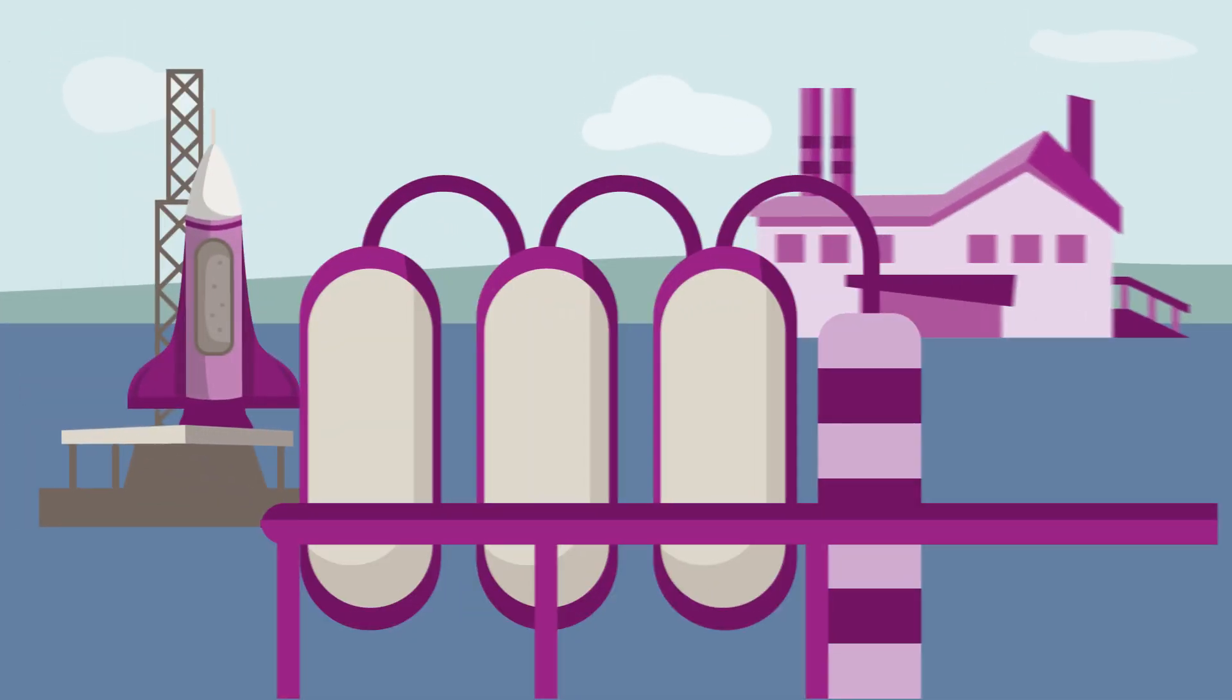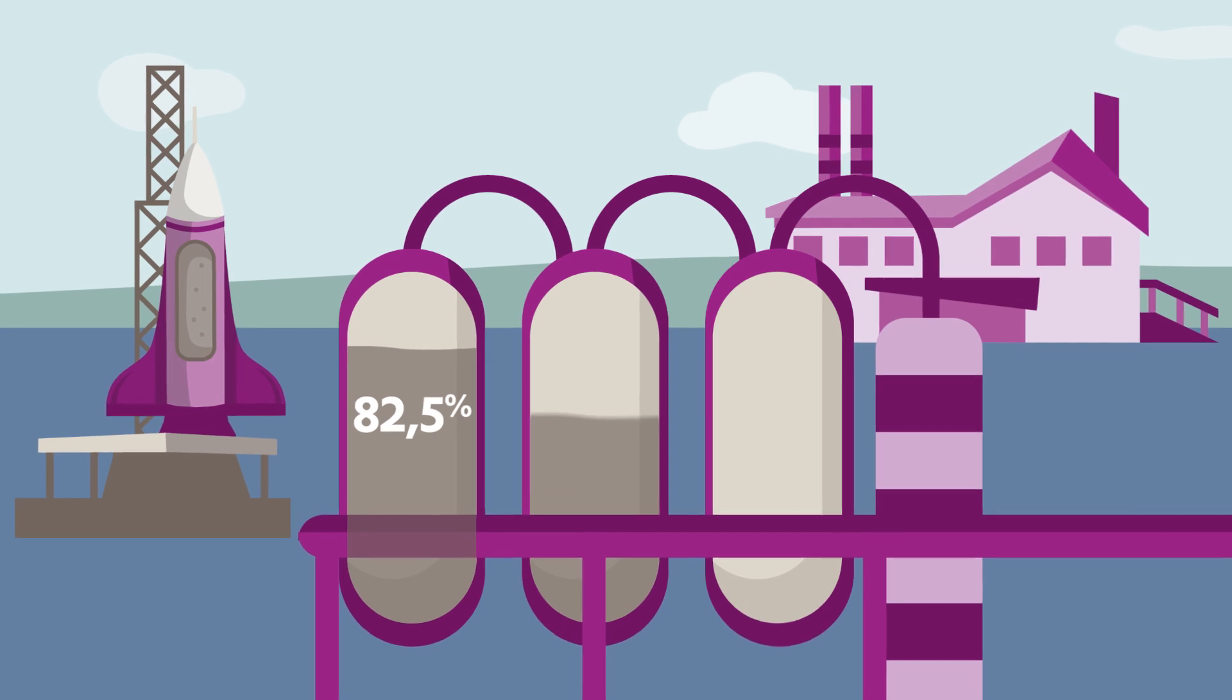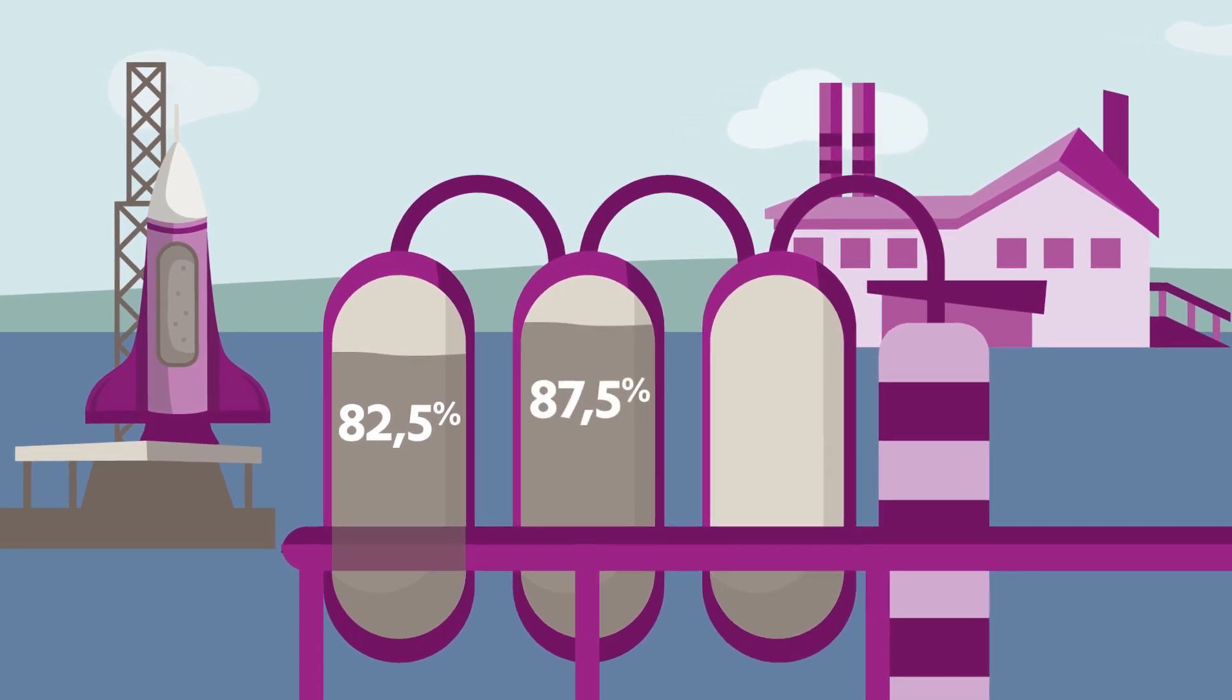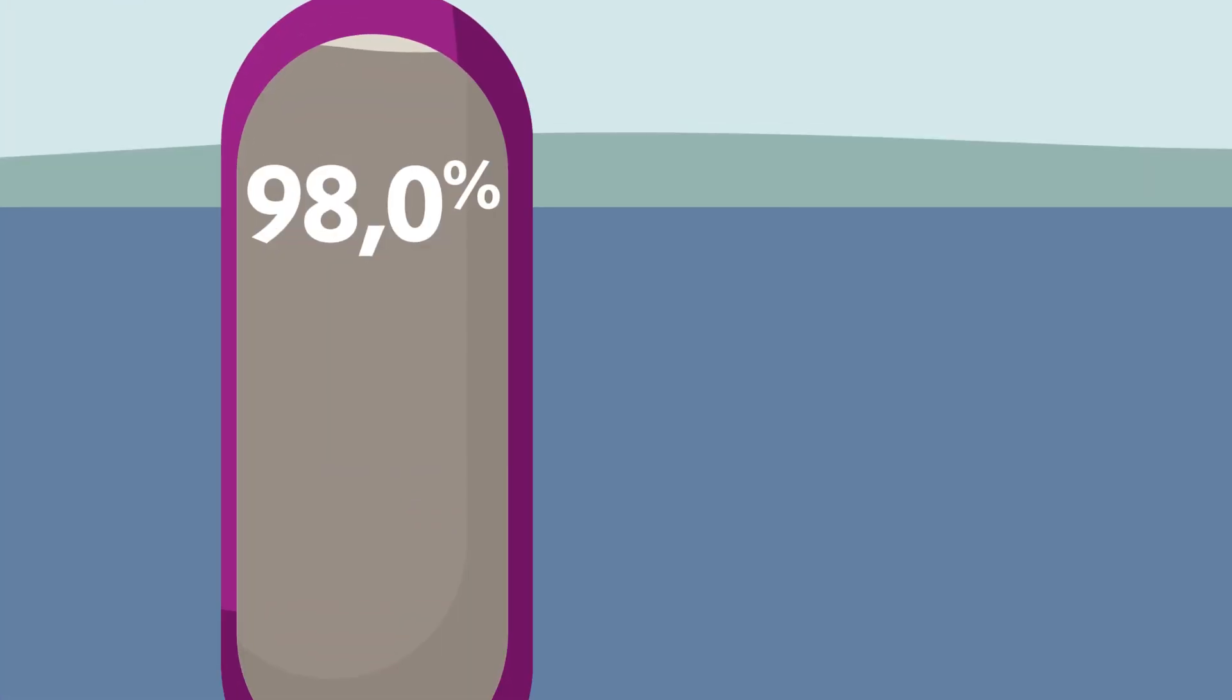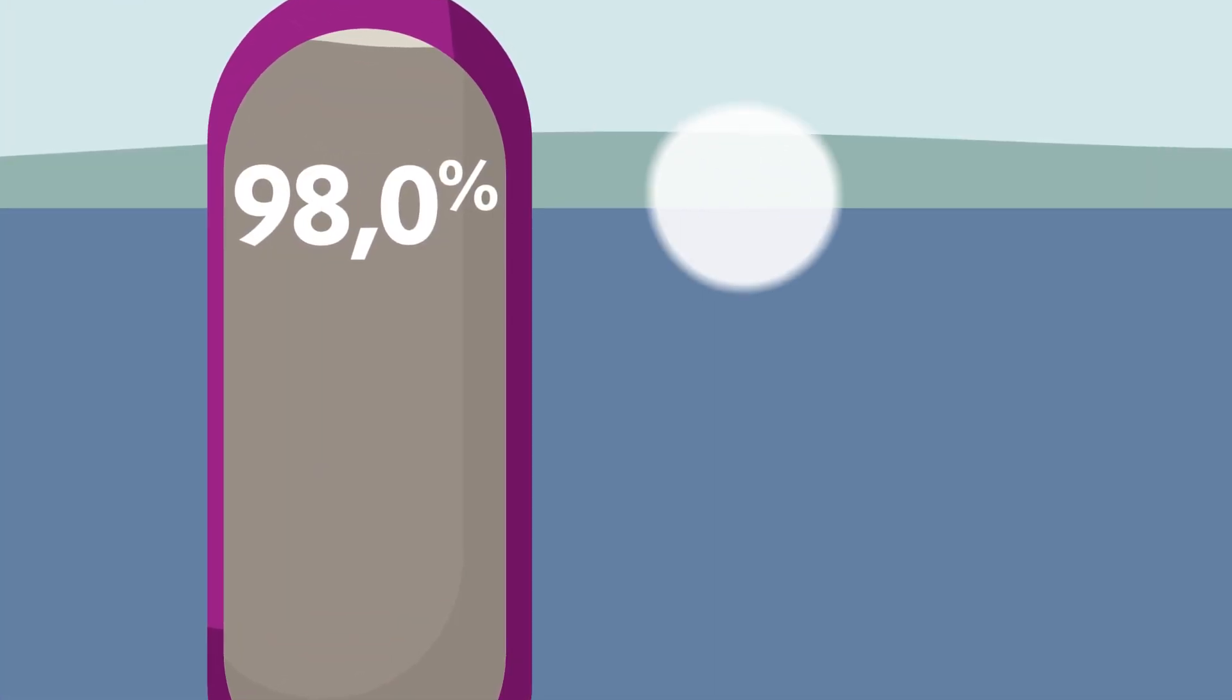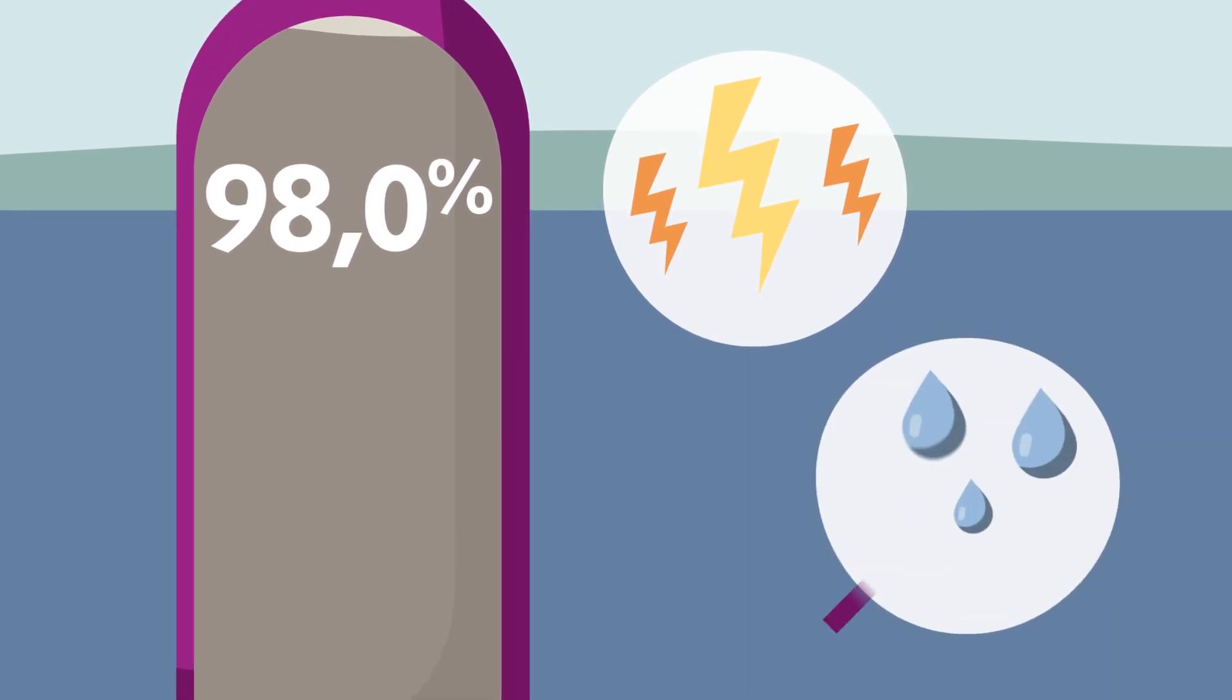For rockets, concentrations of at least 80% by weight are needed. Evonik is already capable of producing Propulse from 82 to 98% in concentration. In 98% hydrogen peroxide, the solution carries an enormous amount of energy and contains hardly any water, which is mere ballast.